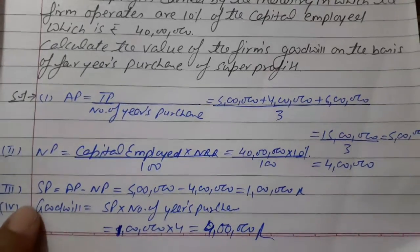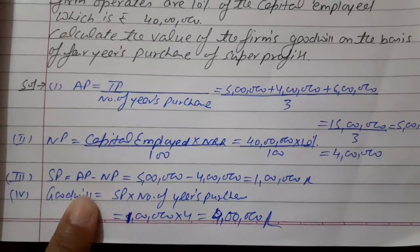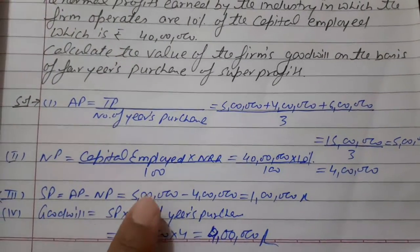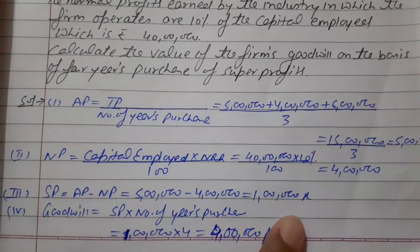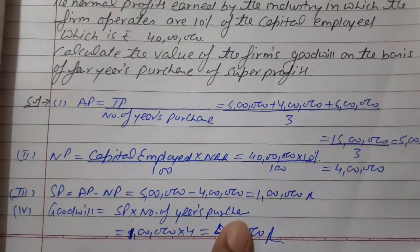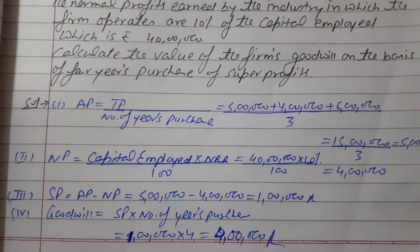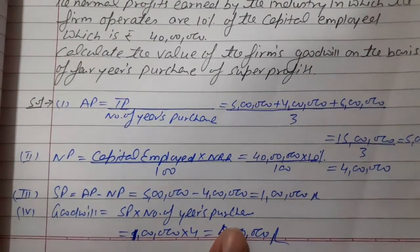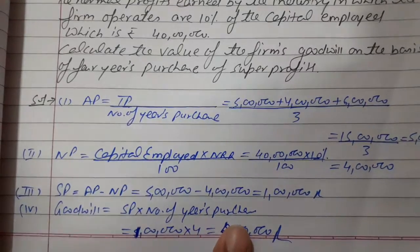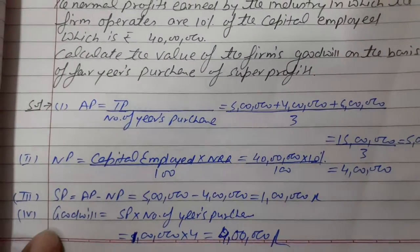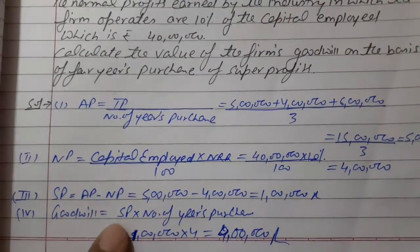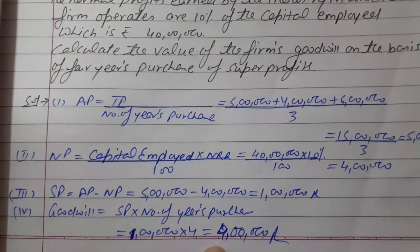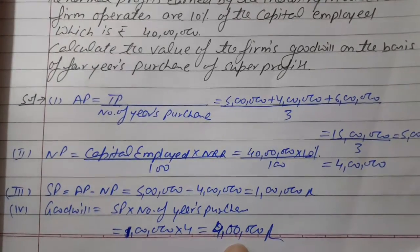Step 3 — Super profit equals average profit minus normal profit: 5 lakh minus 4 lakh = 1 lakh rupees. This means the firm earned 1 lakh rupees as super profit every year. Step 4 — Goodwill equals super profit multiplied by number of years of purchase: 1 lakh × 4 = 4 lakh rupees. So the firm's goodwill based on 4 years' purchase is 4 lakh rupees.